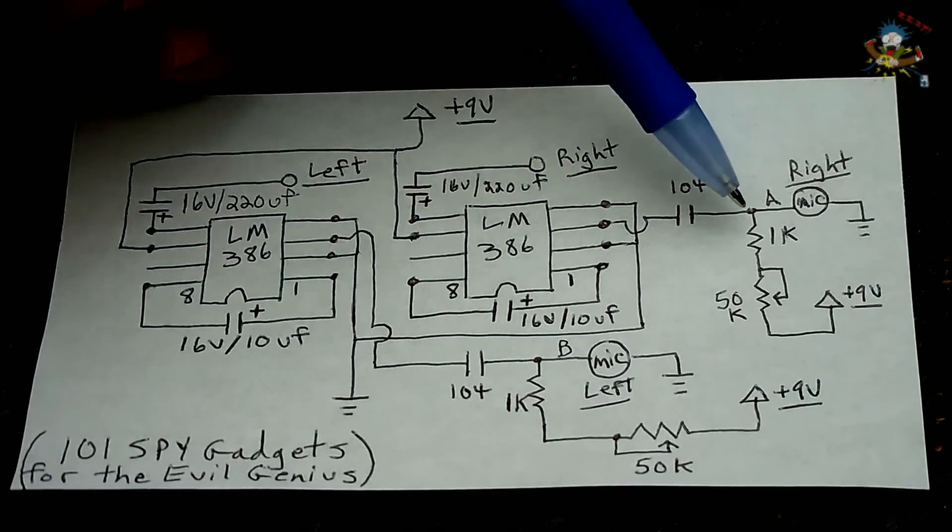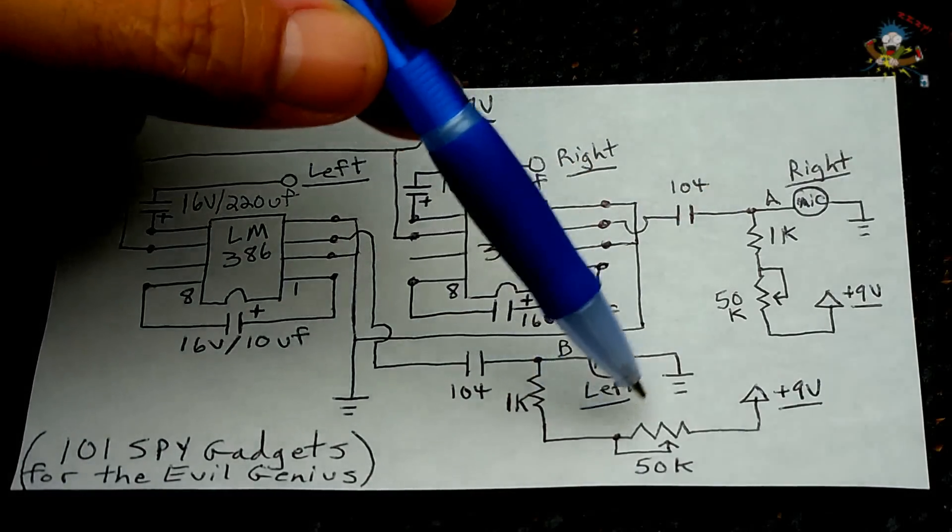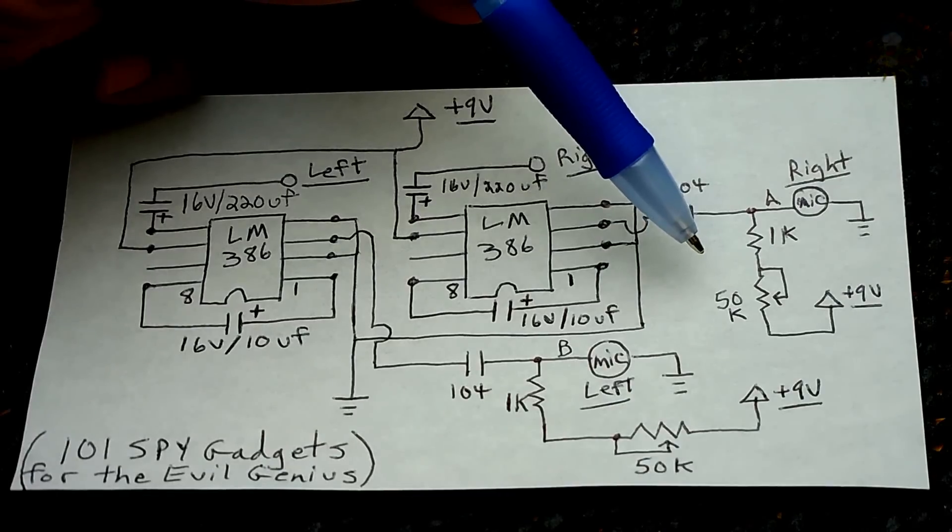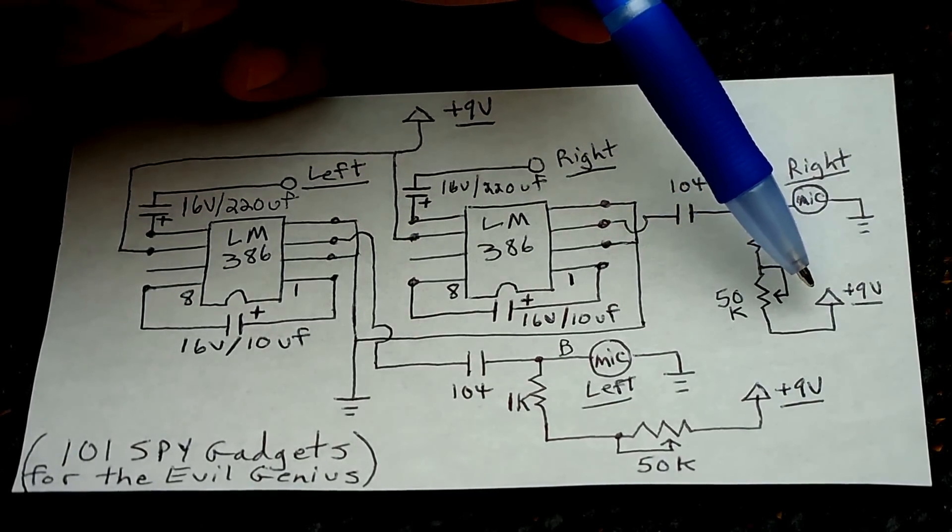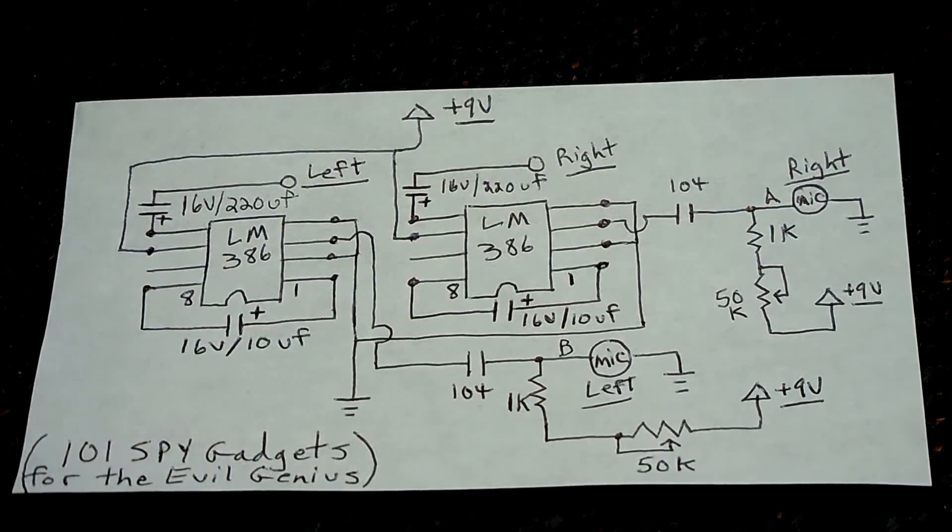Two 50k potentiometers. I used logarithmic, you can use linear. And you're also going to need a 9 volt battery snap, an on-off switch, it could be a push button, as well as a couple of other things which I'm going to show you.